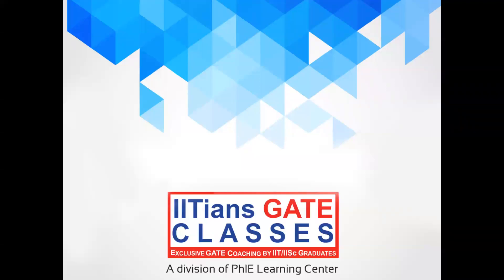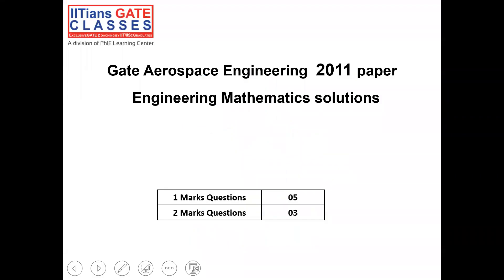Hello everyone, welcome to this video. In this video we will be solving questions of engineering mathematics which were asked in GATE 2011 paper of aerospace engineering. As we can see in this slide, there were a total of eight questions asked, out of which five were for one mark and three were for two marks. Let's try to solve these questions one by one.